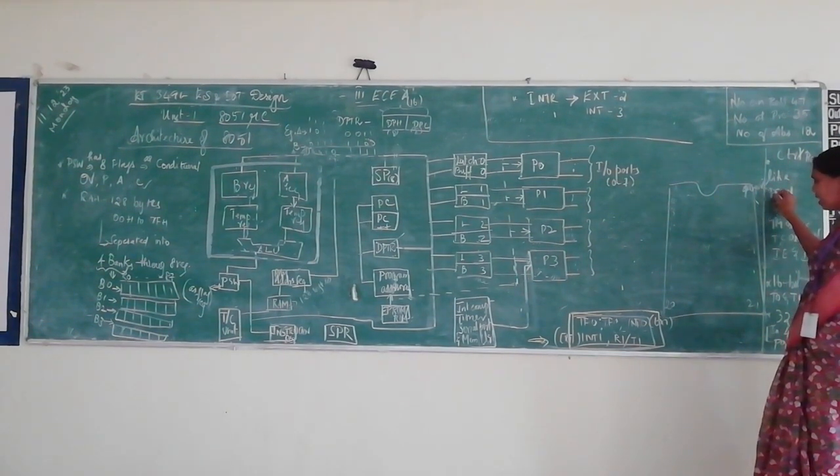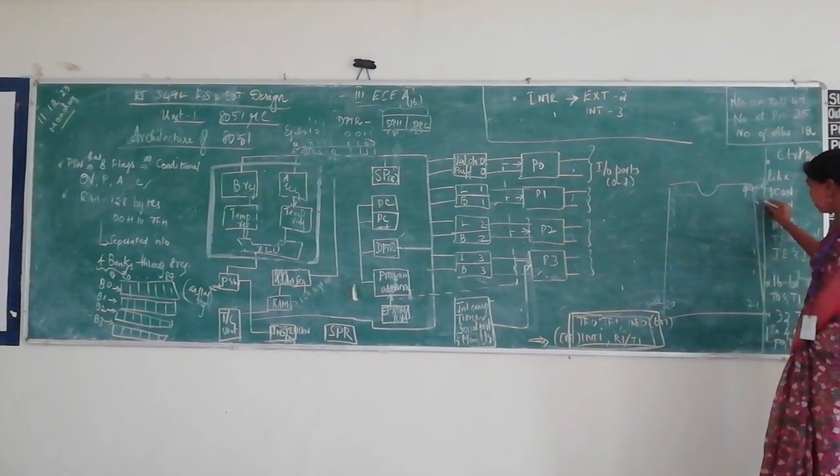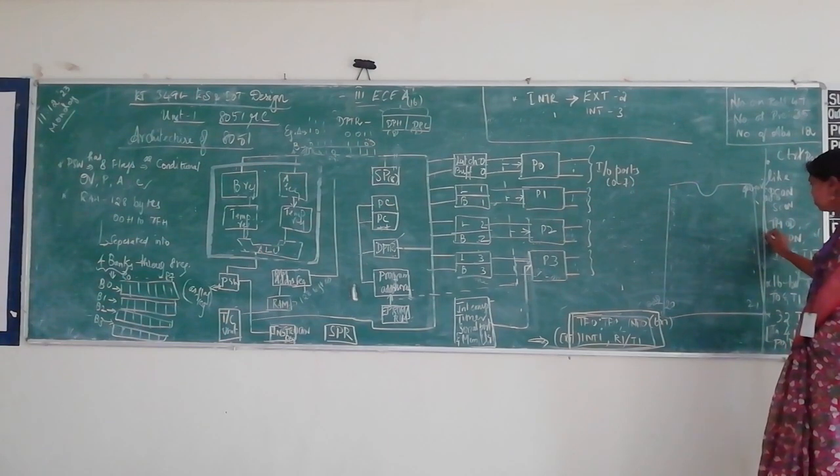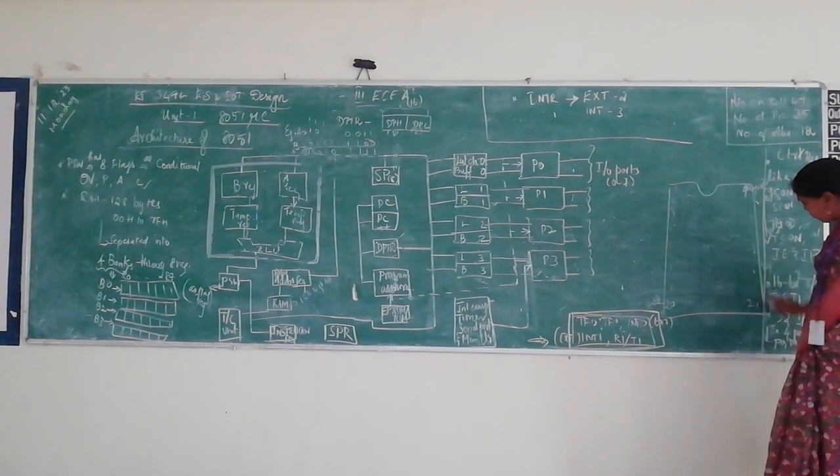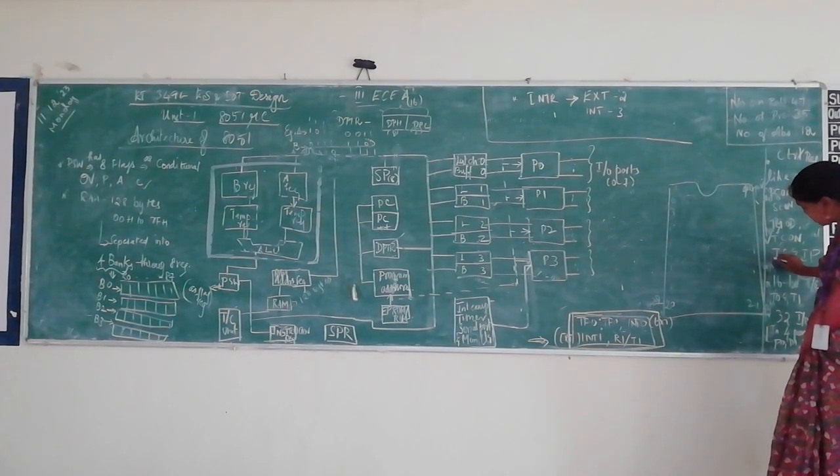Pin 40 will be VCC supply. And 20th will be the ground. And we will be having the ports - port 0.0 to port 0.7. And then from down to upwards, we will be able to identify port 2.0 to pin 2.7.